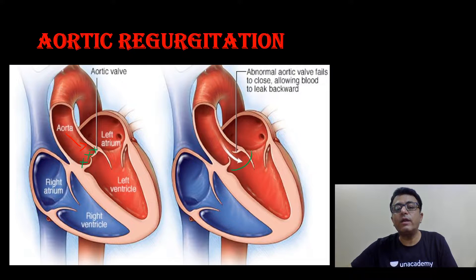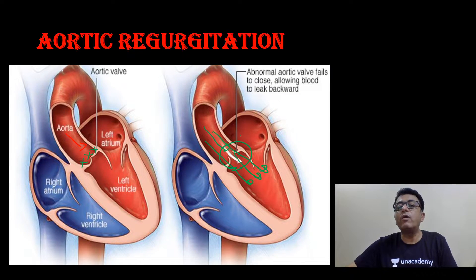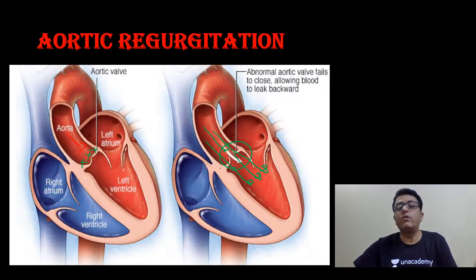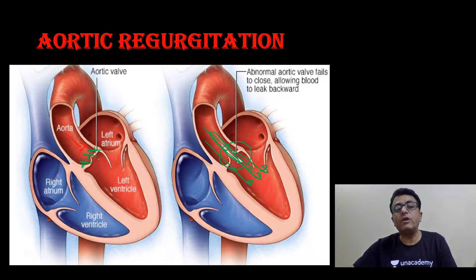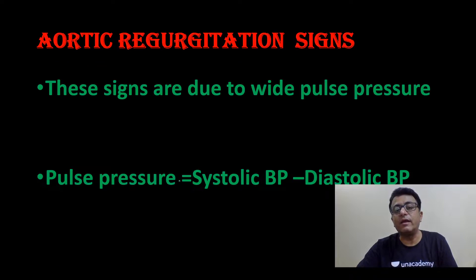If the aortic valve is incompetent, as soon as diastole starts, this blood enters into the LV — this is aortic regurgitation. The abnormal aortic valve fails to close, allowing blood to leak backward into the LV. When the aortic valve is incompetent and leaky, it allows blood to come back into the LV during diastole.